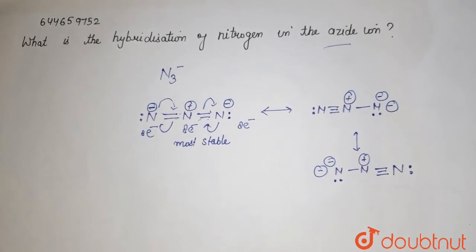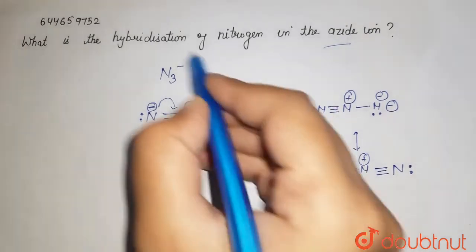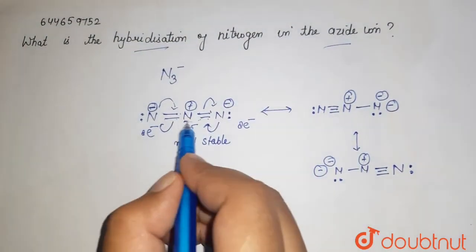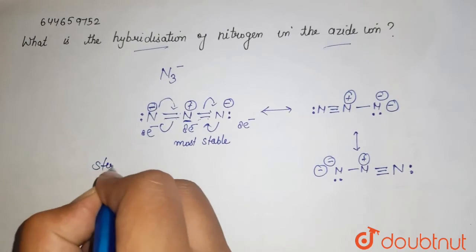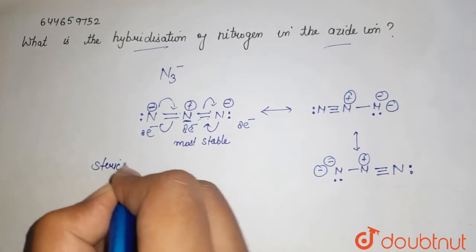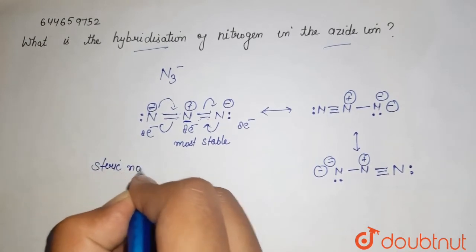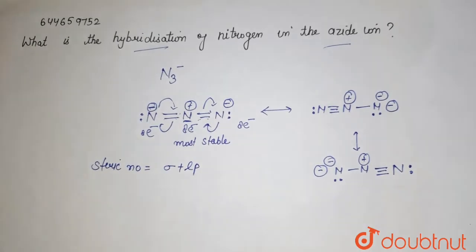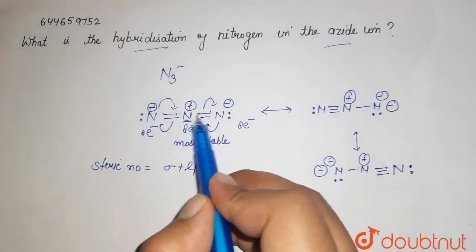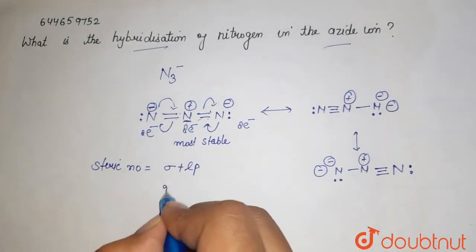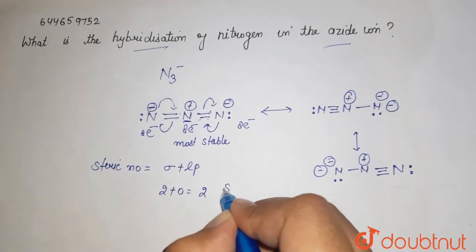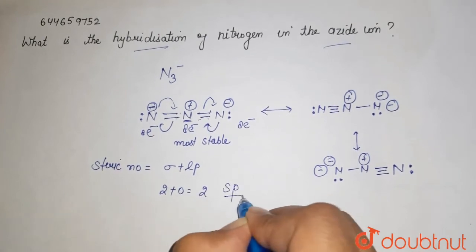Now we will see the hybridization. If you see the central atom — that nitrogen — hybridization is calculated by the steric number, which equals the number of sigma bonds plus the number of lone pairs. For the central nitrogen, it has two sigma bonds and no lone pair, so the steric number is two. Therefore, the hybridization of the central atom is sp.